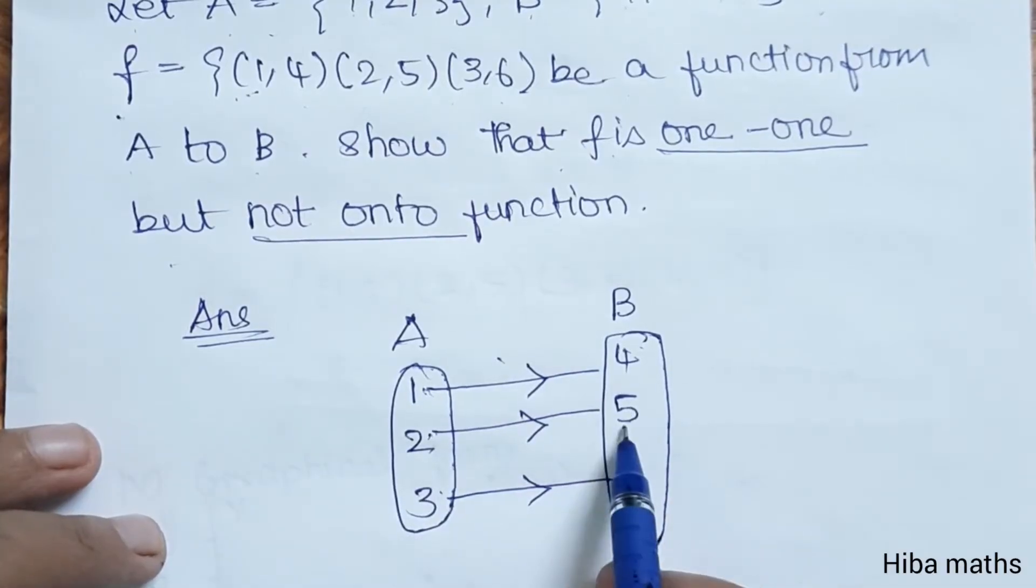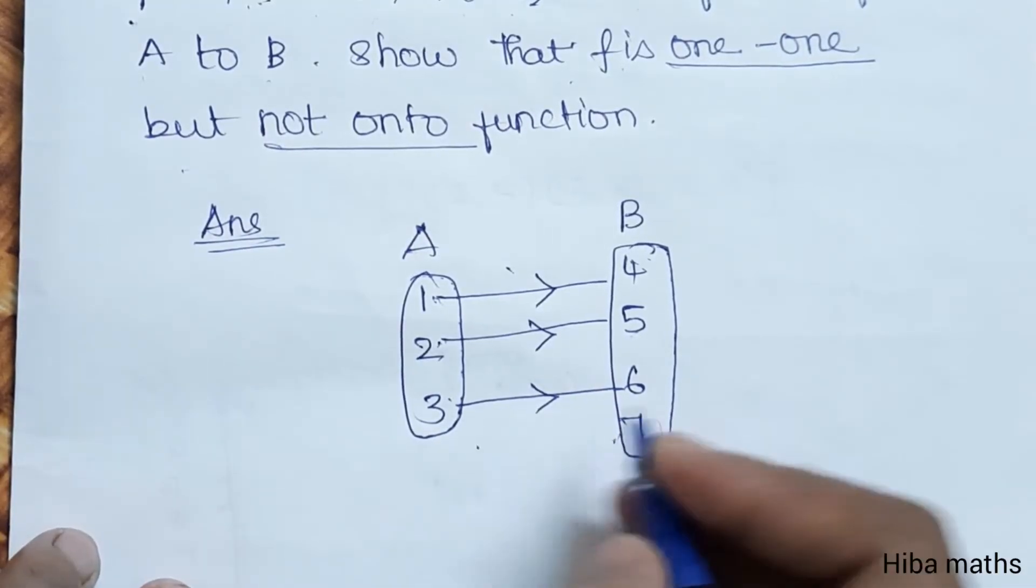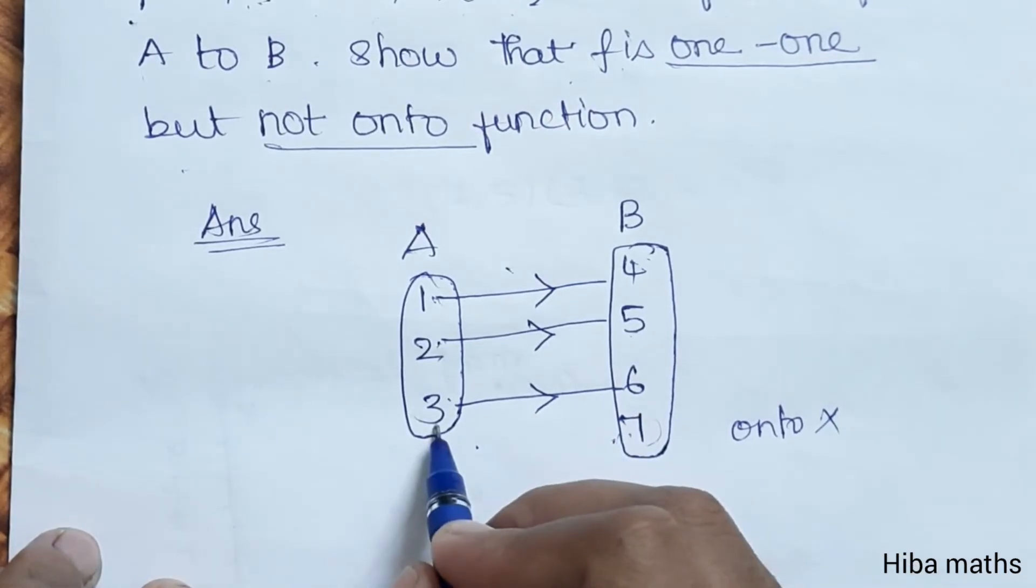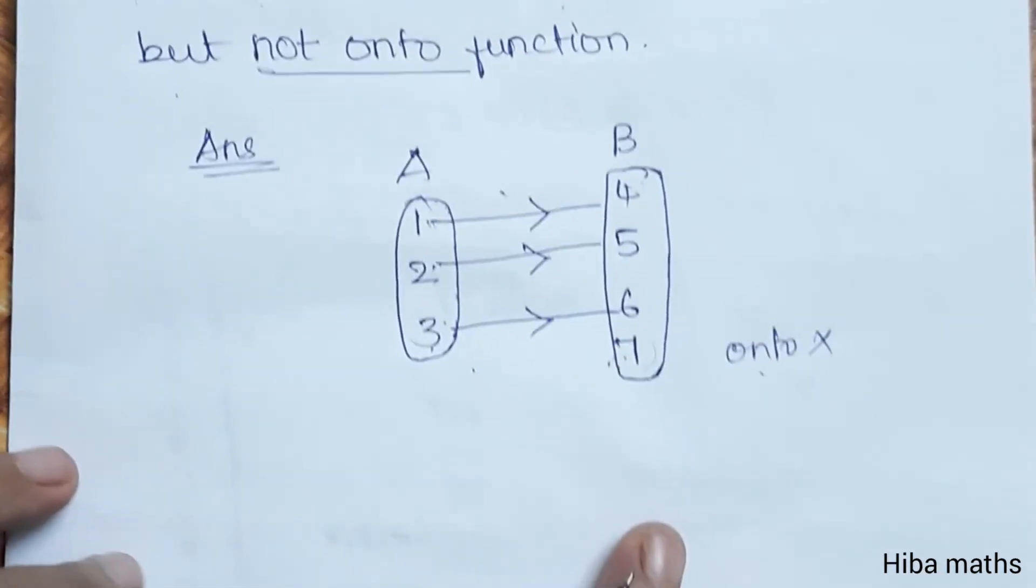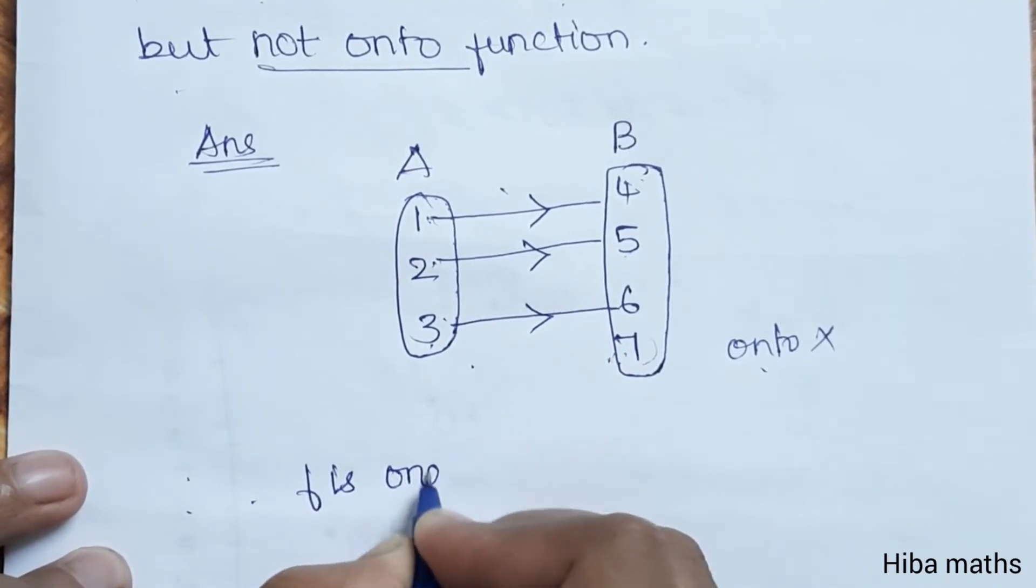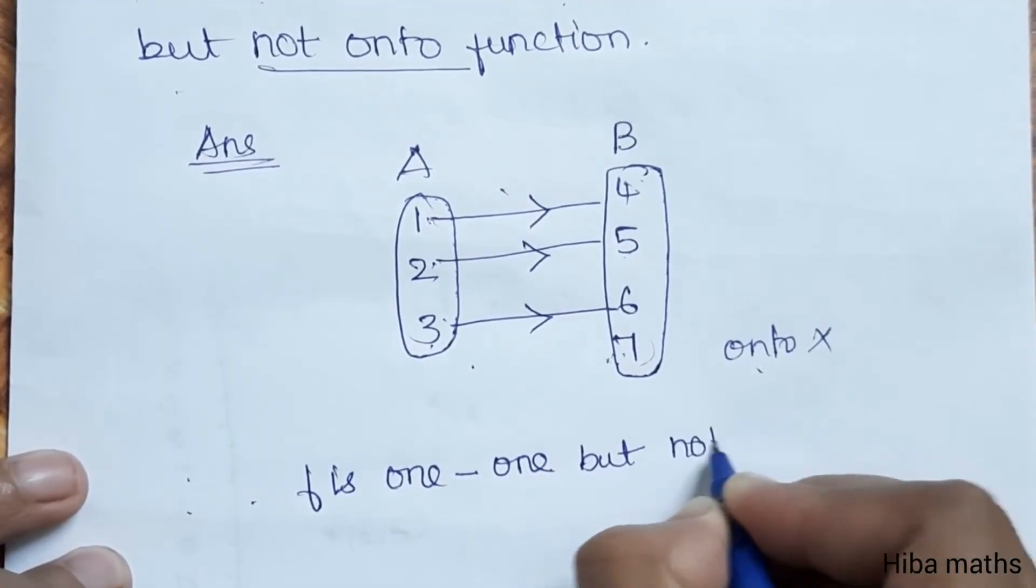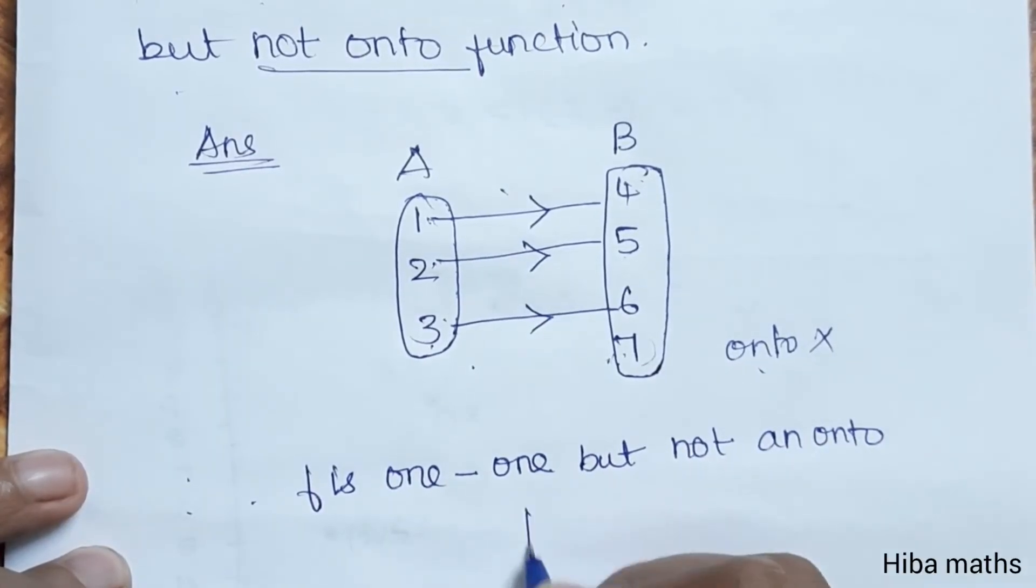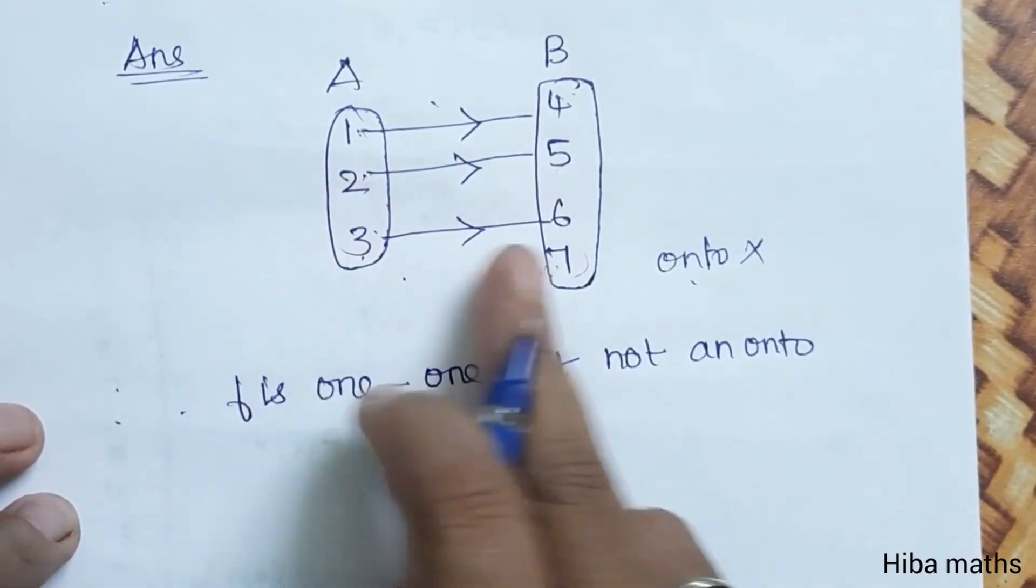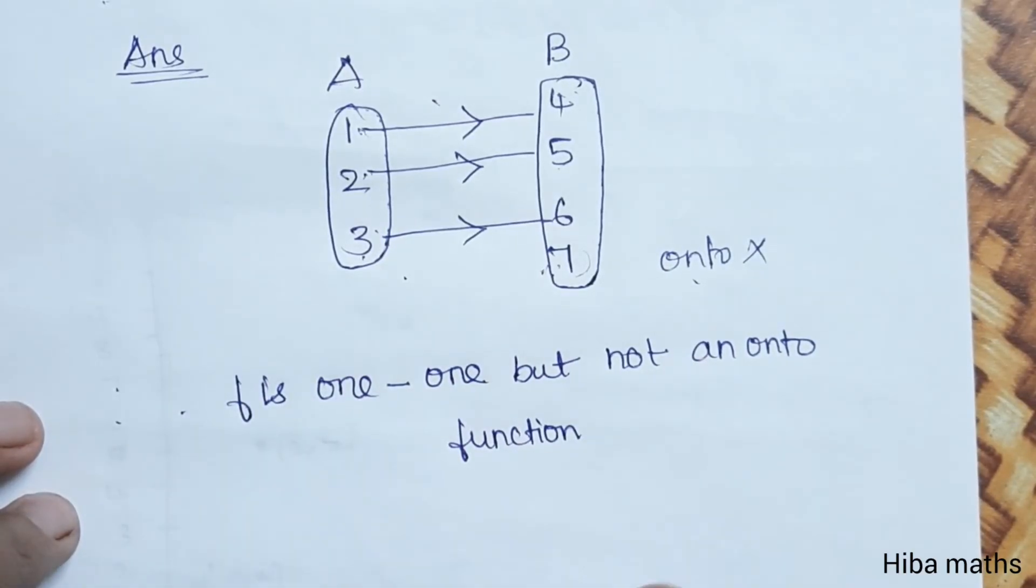All elements in A map to unique elements in B, so it is one-to-one. But element 7 in B has no pre-image in A, so it is not onto.